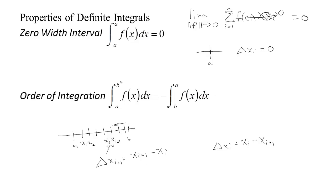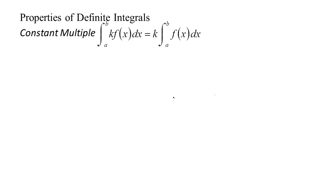So if you switch the order of integration — instead of going in one direction you go in the other direction — then the sign of your dx's or delta x values will change, and so you'll get the opposite value for the integral.